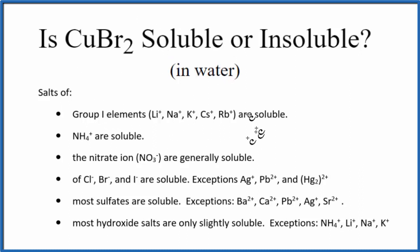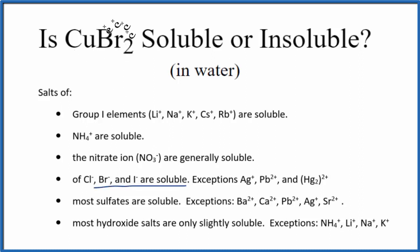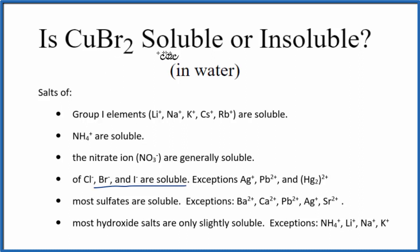So we have our solubility rules — this is a brief set of the solubility rules. We go down and we see that Br⁻. In general, with something like copper 2 bromide, we have this bromide ion, and those are soluble with a few exceptions, but copper is not an exception. So we expect CuBr2 to be soluble in water.